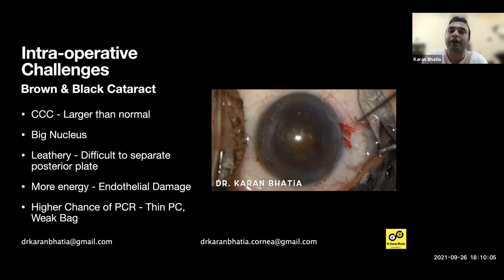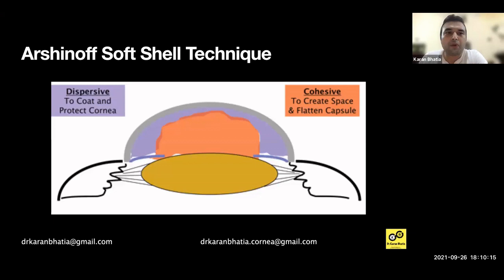You have high chances of PCR for the reasons just described. A good thing would be to practice the Arshinoff soft-shell technique — using a high molecular weight dispersive OVD like Viscoat or DisCoVisc on top, and then injecting a cohesive OVD underneath. Dispersive OVD helps protect the endothelium. I use this in NS3-plus cases as a habit.